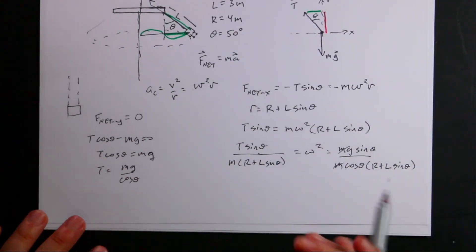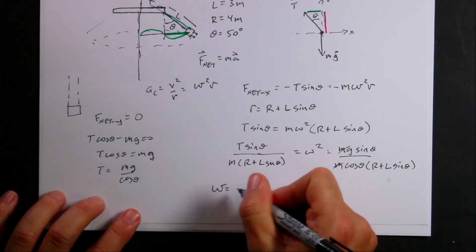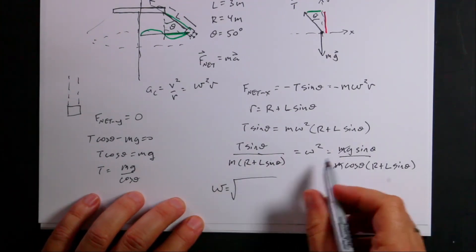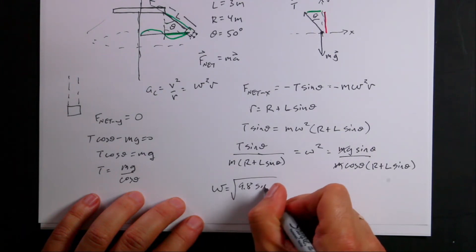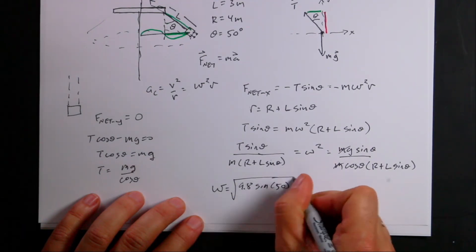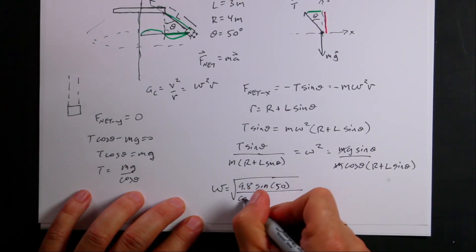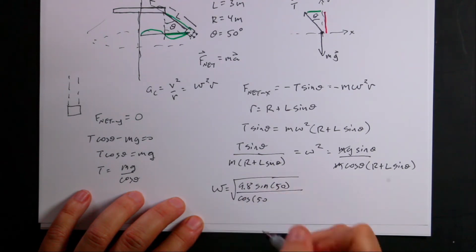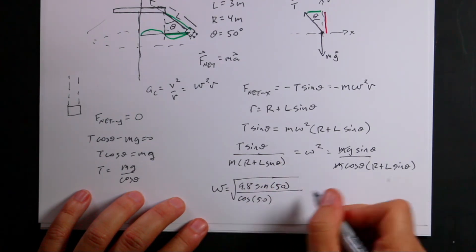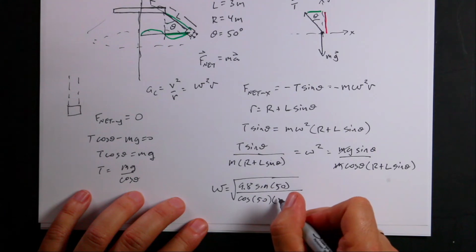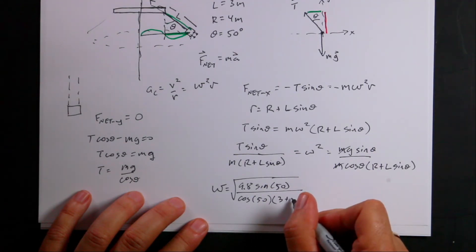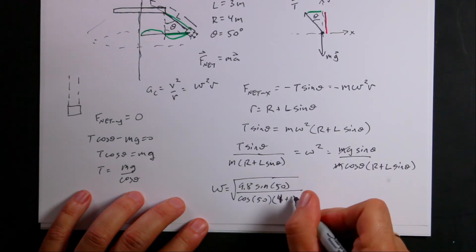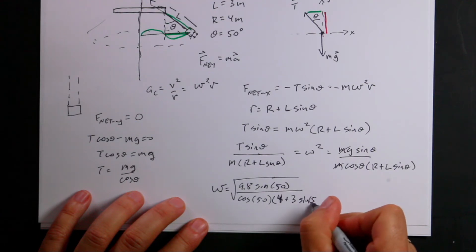So ω = √[g sin(50°) / (cos(50°) × (R + L sin(50°)))]. That's √[9.8 × sin(50°) / (cos(50°) × (4 + 3 sin(50°)))].